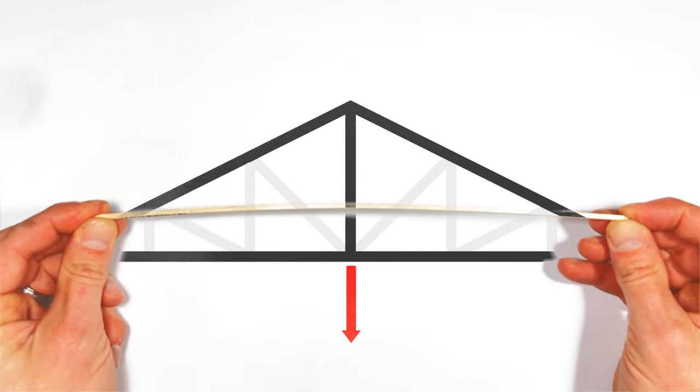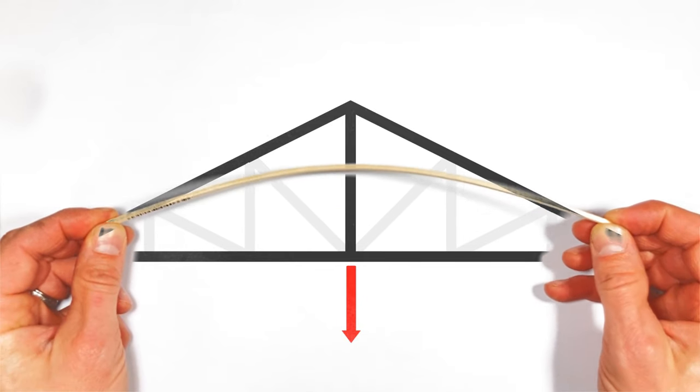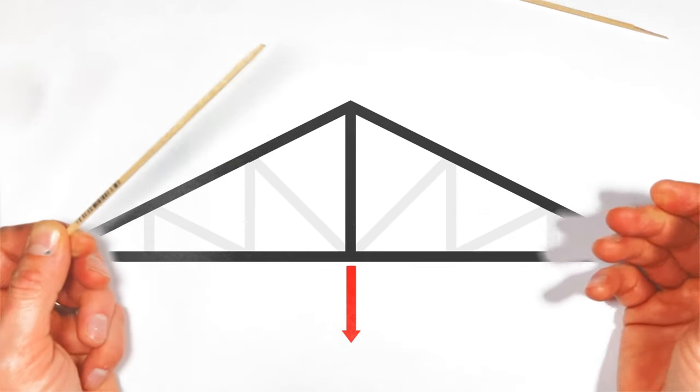But if we put a member or a beam like this under compression, it has a tendency to bend, and eventually, if it bends too much, it will buckle.